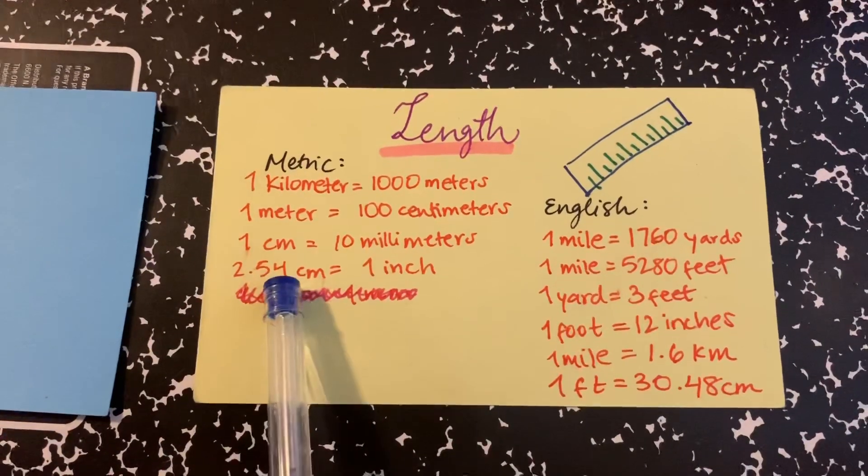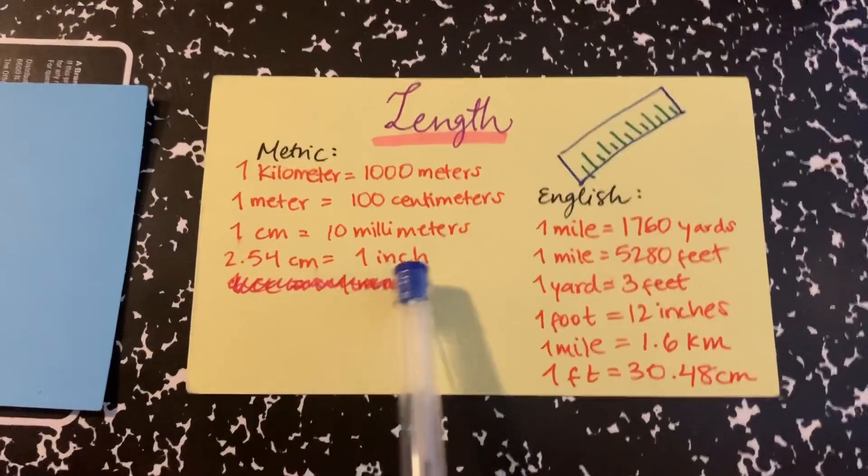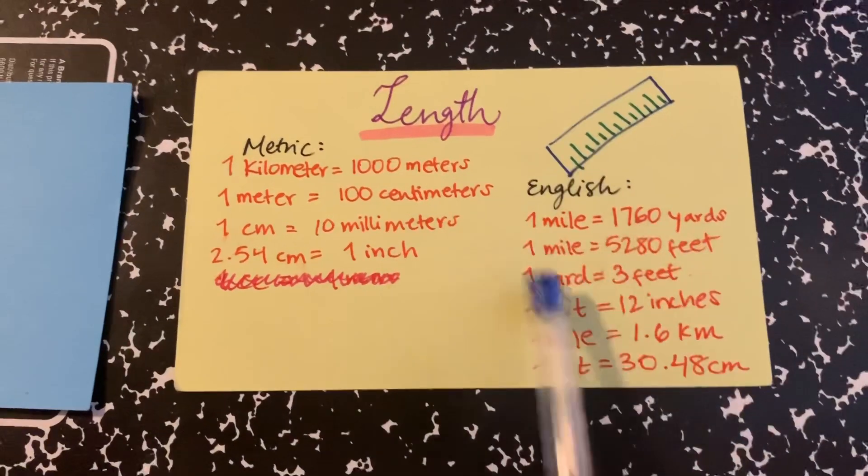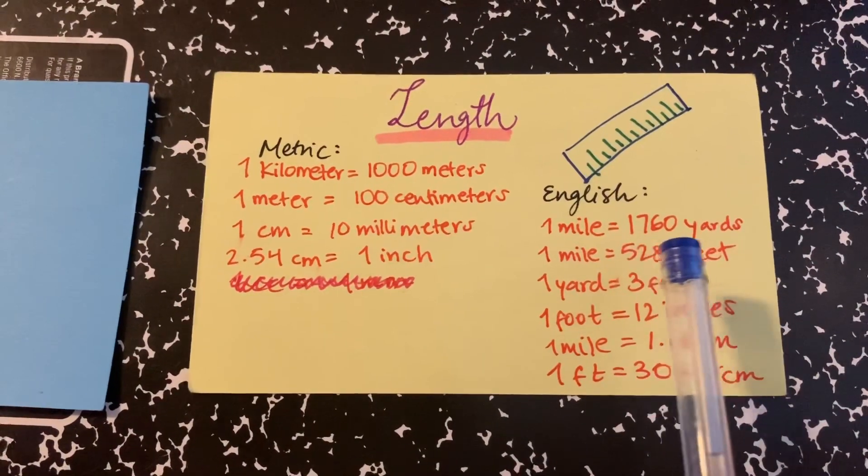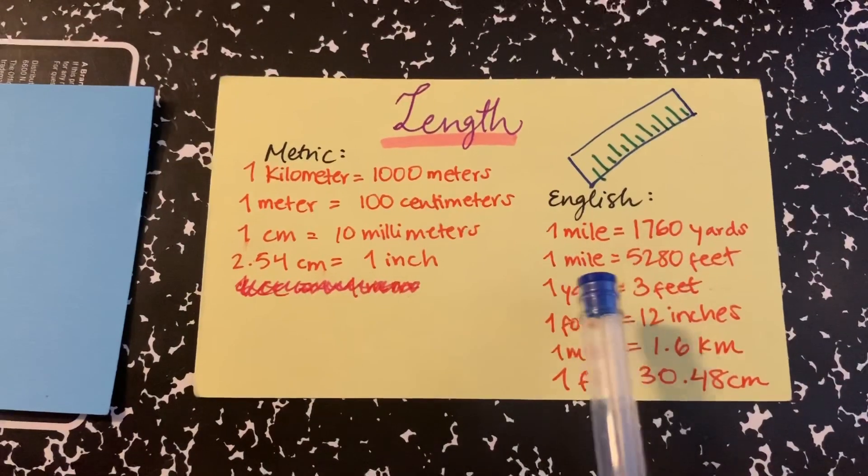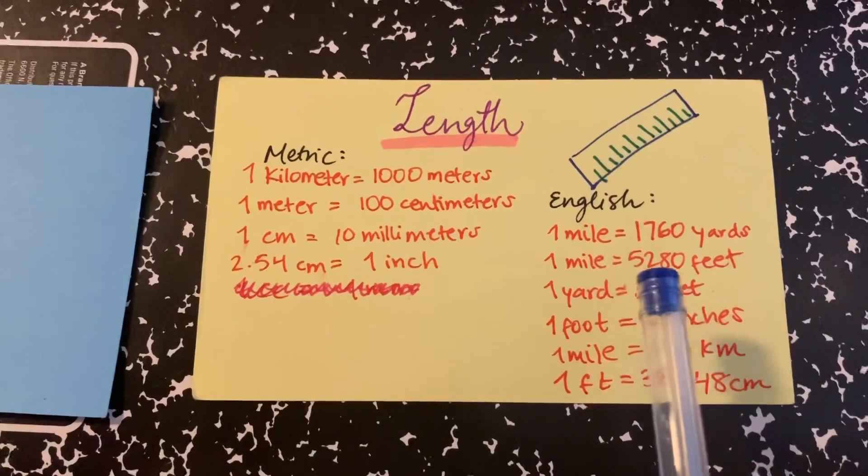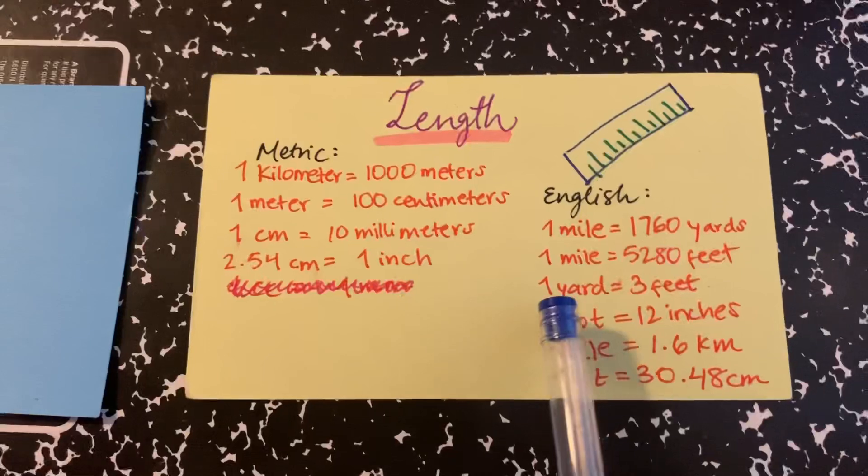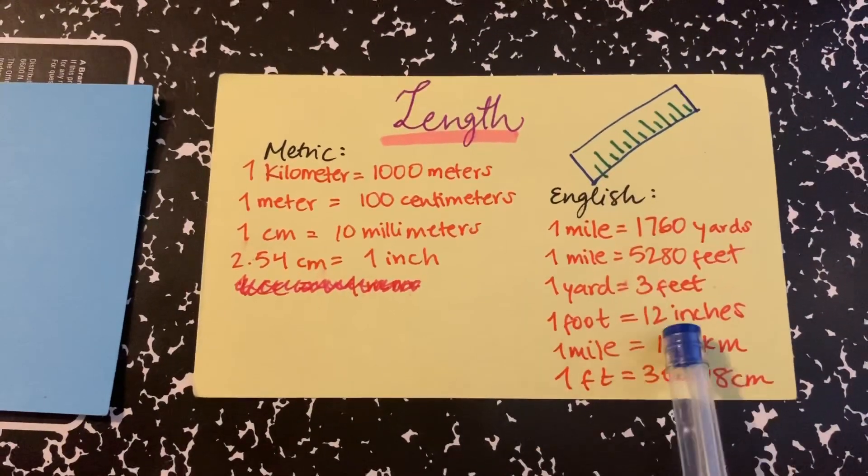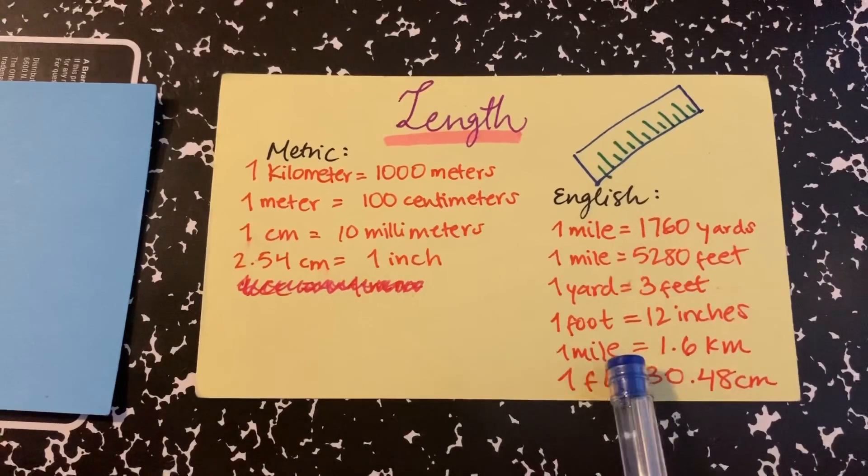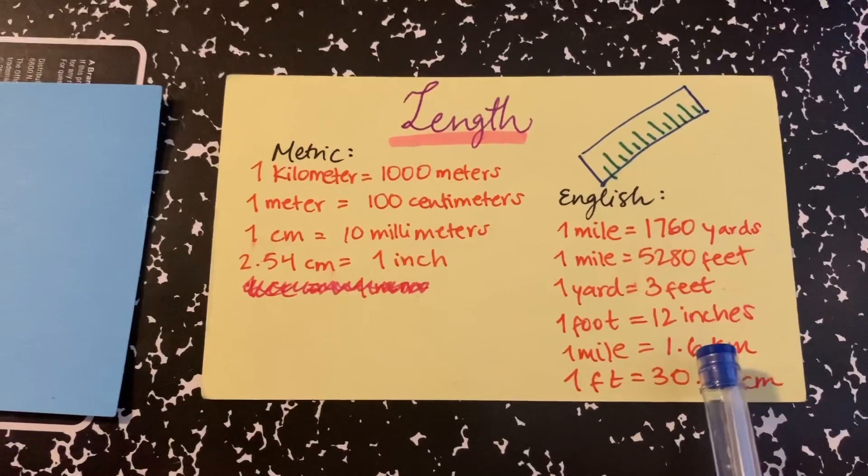And 2.54 centimeters is equal to 1 inch. In the English one, we have 1 mile is equal to 1,760 yards, 1 mile is equal to 5,280 feet, and 1 yard is equal to 3 feet. 1 foot is equal to 12 inches.